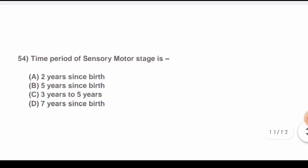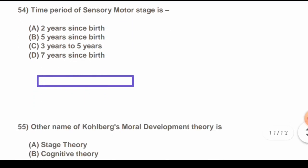Question 53: Time period of sensory motor stage is: Options are: A) Two years since birth, B) Five years since birth, C) Three years to five years, D) Seven years since birth. The correct answer is A) Two years since birth.